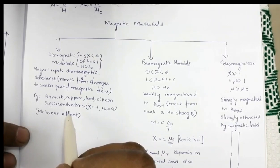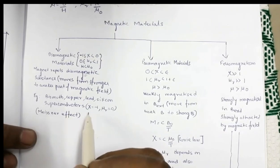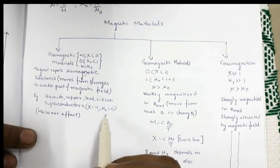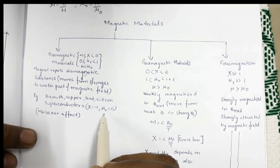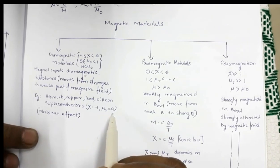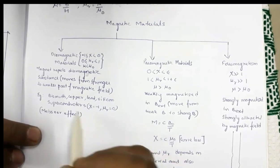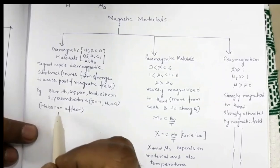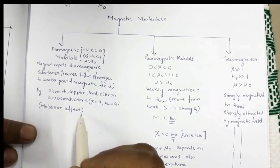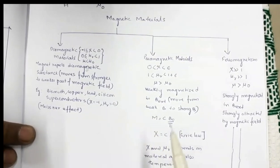Superconductors are the ideal diamagnets — for them, magnetic susceptibility is −1 and relative magnetic permeability is 0. You must also go through the concept of the Meissner effect.